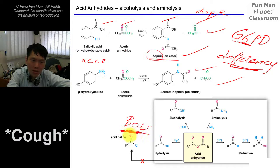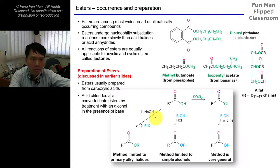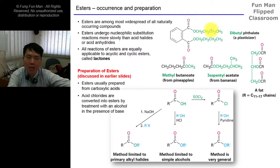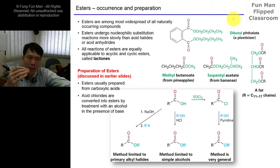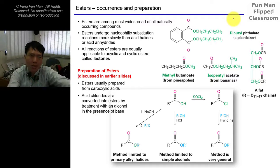Acid chloride is the king - it is the highest end of reactivity, you can't get to this. Now for esters, they are among the most widespread naturally occurring compounds, and they undergo nucleophilic substitution reactions more slowly than acid halide or acid anhydride, because of the electron delocalization effect. Anhydrides have two C=O groups to delocalize electrons, giving rise to different stability of the resonance form.